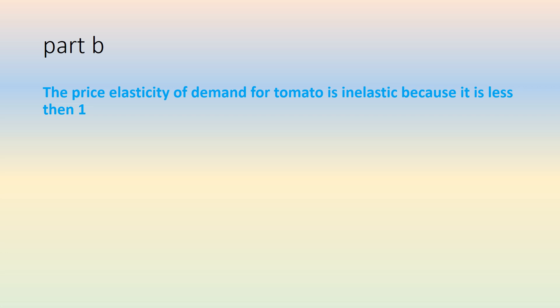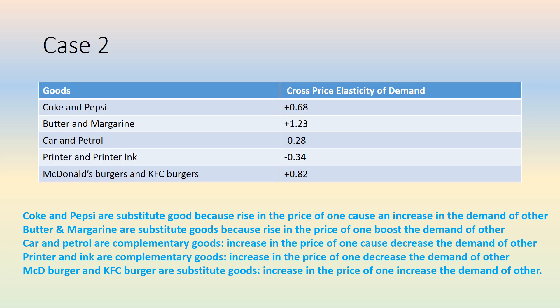Case 2: This table shows goods and the cross-price elasticity of demand. Cross-price elasticity explains the relationship between two goods. If there is a hike in the price of one good, does it impact the demand of another product?